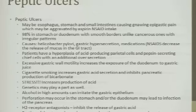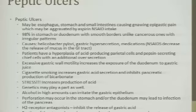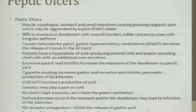Patients can have hyperplasia of acid-producing parietal cells and pepsin-secreting cells. Excessive gastric wall motility, cigarette smoking, stress, genetics, and alcohol in high amounts can irritate the gastric epithelium. H2 receptor antagonists can inhibit the release of gastric acid. A portion of the stomach can be removed, or the vagus nerve may be cut, to decrease the release of acid.